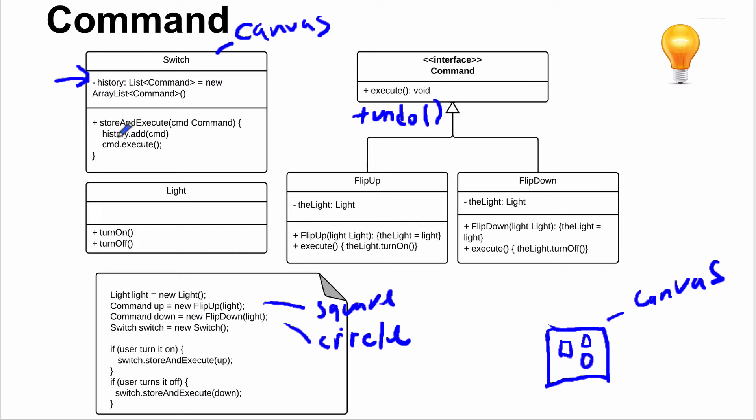You can add undo methods to commands like 'undo draw square' or 'undo draw triangle.' Because you have the history, you implement an undo() method on the canvas that picks the most recent command from history and calls undo() on it. That's how you implement undo — very useful for GUI apps like desktop and mobile apps where you have menu items that need undo or redo functionality.